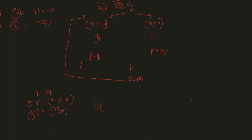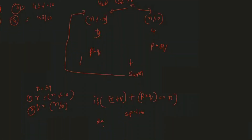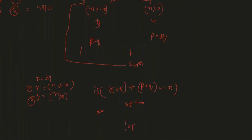Inside the if condition I write the equation: (reminder + quotient) + (reminder × quotient), and compare it with n using double equals. If it equals n, I print 'special number'; else I print 'not a special number'.